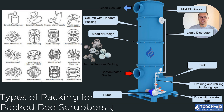Plastic balls — random packing: random packing like plastic balls might seem simple, but don't let that fool you. Made from polypropylene, these balls provide a large surface area for the gas and liquid to interact. They're often used in less corrosive environments and are a cost-effective solution for scrubber applications that don't require the high efficiency of structured packing.